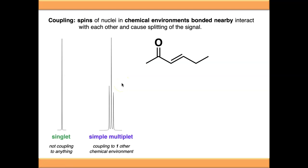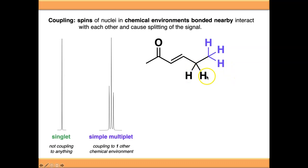We then have what I call simple multiplets, where your protons are coupling to one chemical environment which is sufficiently close enough to cause coupling. Looking at these purple protons on the ends, they are close enough to one chemical environment in the form of these two protons here. So they will couple with only that chemical environment, giving us a simple multiplet.